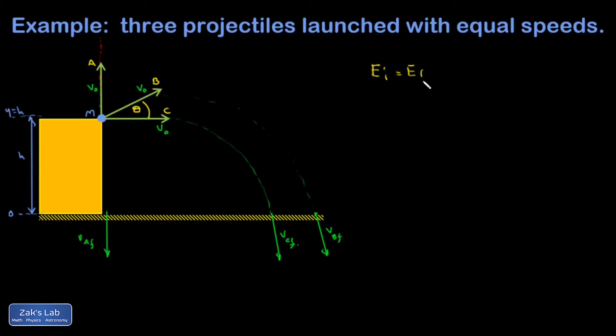And then I can express energy conservation for any one of these things. E initial equals E final. Maybe I'll say I'm doing the analysis on projectile A. And in my initial state, I've got kinetic energy, one half M V naught squared.